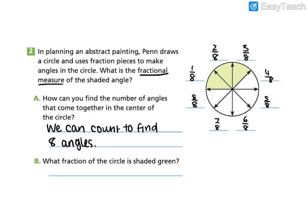All right, so then we should be able to say what fraction of the circle is shaded green. Three-eighths of the fraction is shaded green.